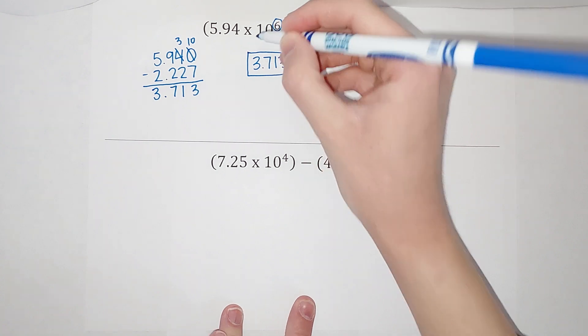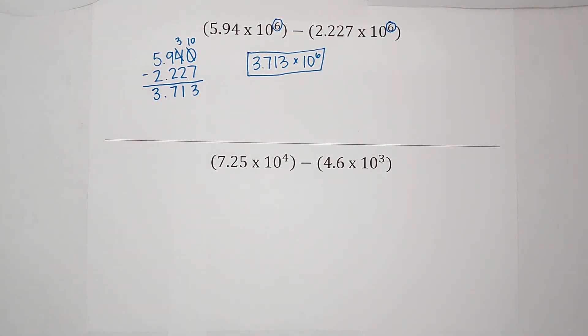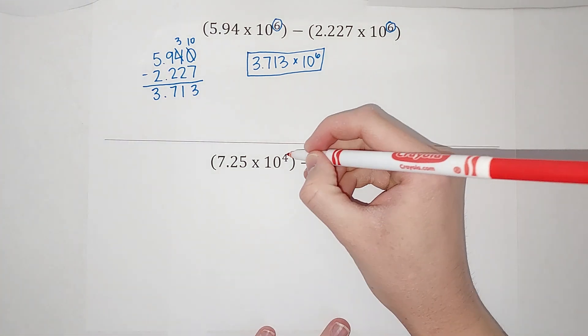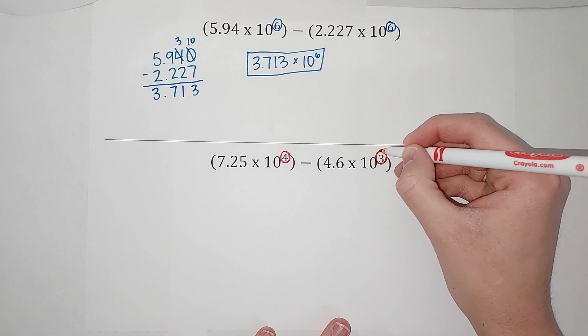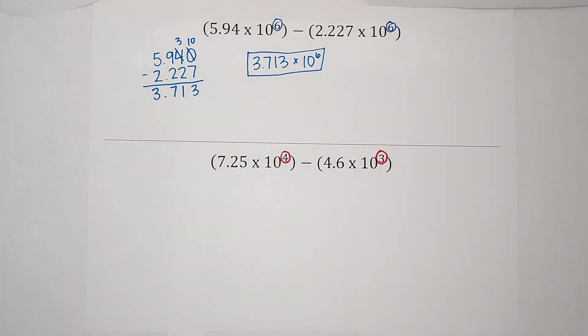Okay, so when the exponent is the same, it's pretty easy, right? But what about when they are different? Here we've got 4 and 3. We want these to be the same. So we need to convert one of these so that they're the same. We can either get them to be both 10 to the fourth.